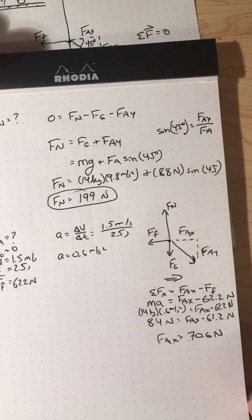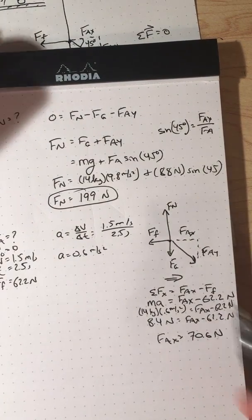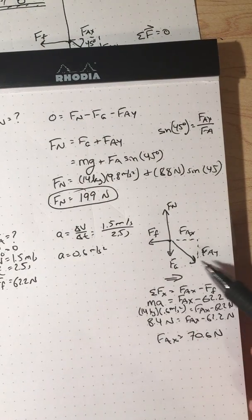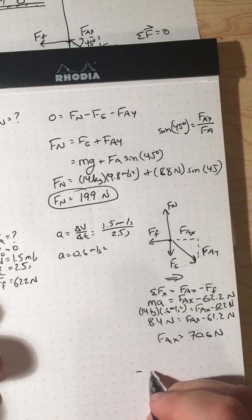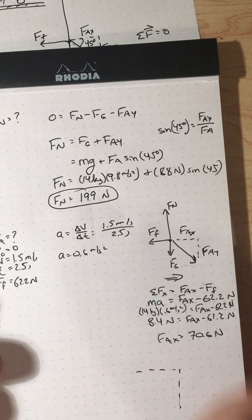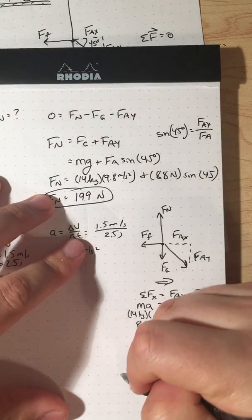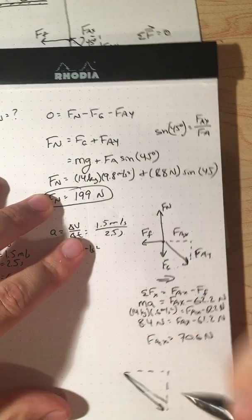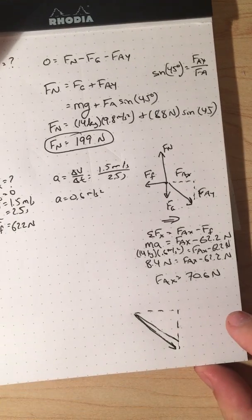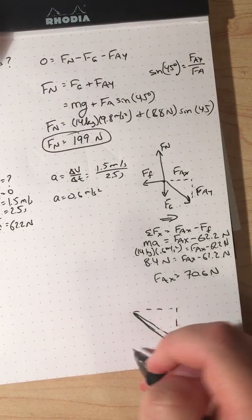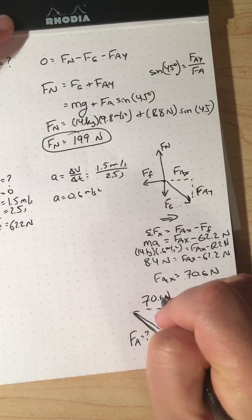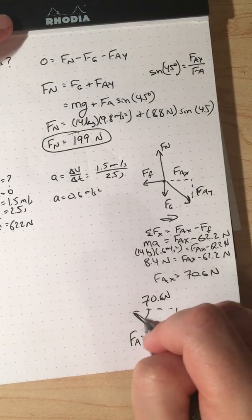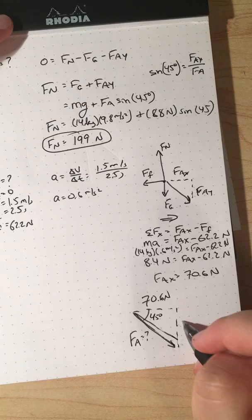It was asking for the new applied force, which is the hypotenuse here. So we've got a triangle where we've just found that this side is 70.6 newtons. If this is a 45 degree angle on that side, 70.6 newtons. This side is also 70.6 newtons.